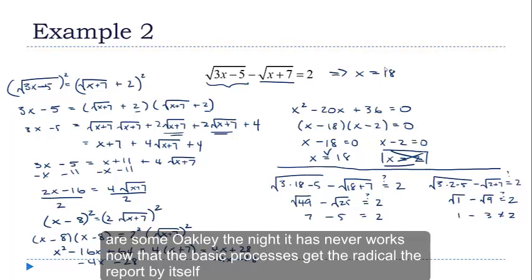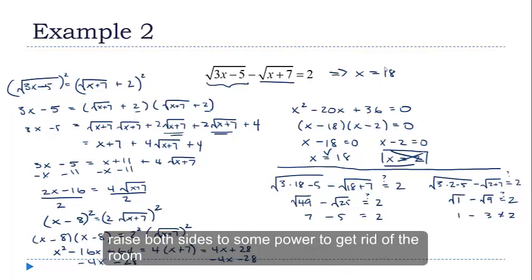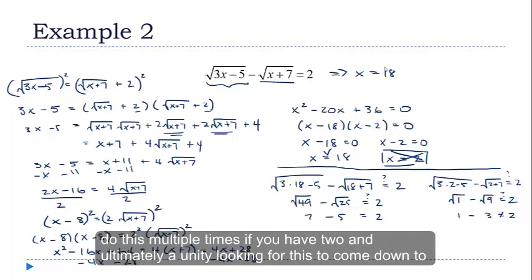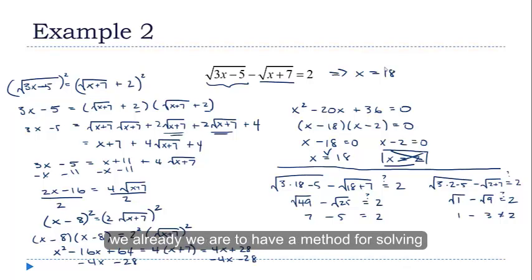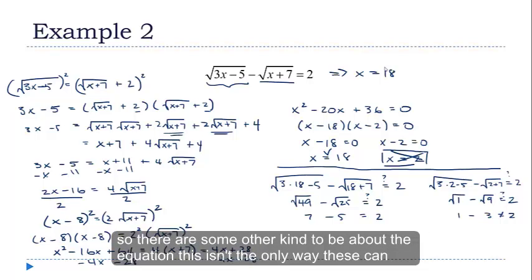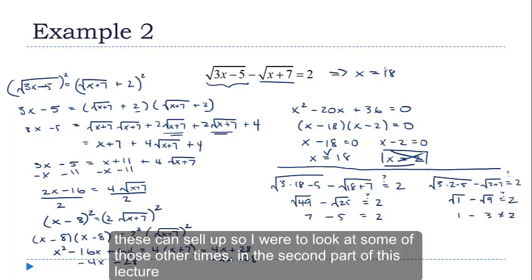Hopefully you've got an idea of how this method works now. The basic process is: get the radical — the root part — by itself; raise both sides to some power to get rid of the root; do this multiple times if you have to. Ultimately, you're looking for this to come down to a linear equation, a quadratic equation, or some other kind of equation that we already have a method for solving. There are some other kinds of radical equations, so we're going to look at those in the second part of this lecture.